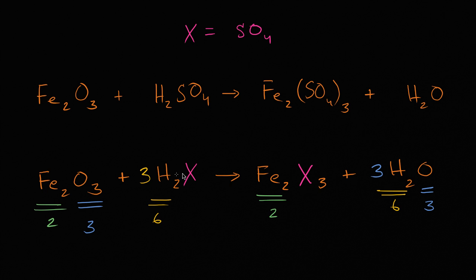So on the left hand side I have three sulfate groups. Let me do that in that magenta color. So I have three sulfate groups, and on the right hand side I also have three sulfate groups. So I'm all balanced.